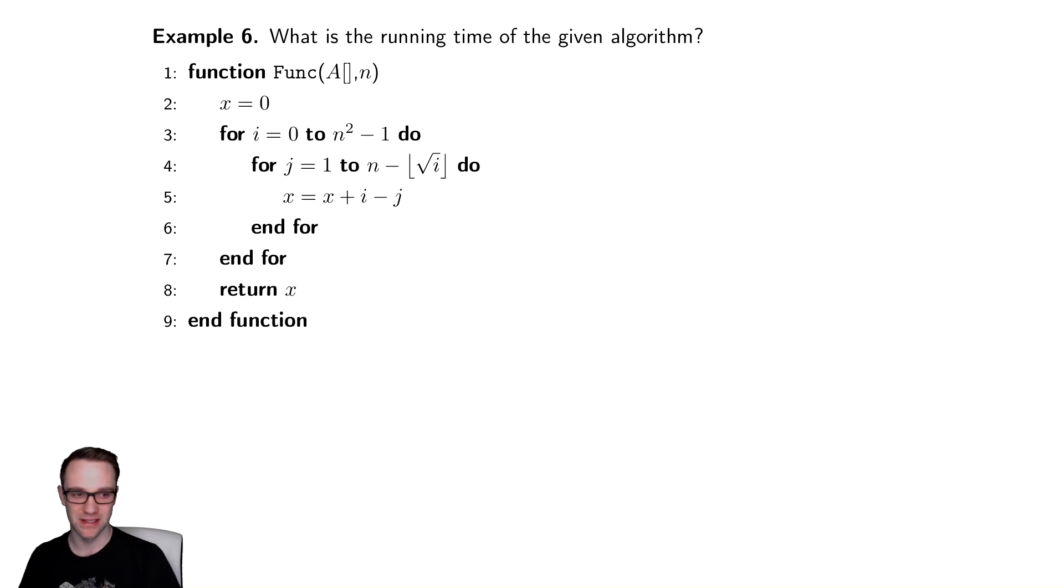Our next example looks extremely similar to the last one. We've just changed the bounds a little bit, but we have some stuff with radical i's and some stuff with n's, so let's get right into it.